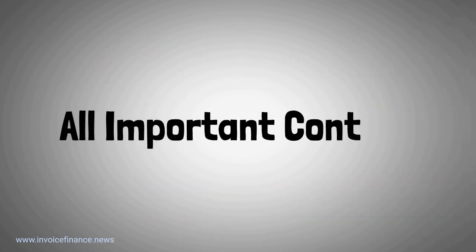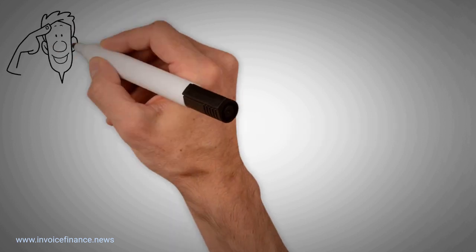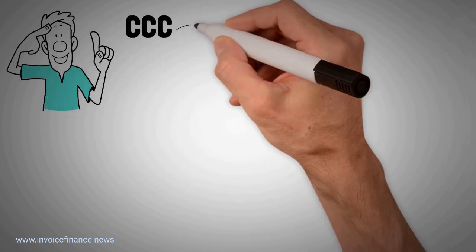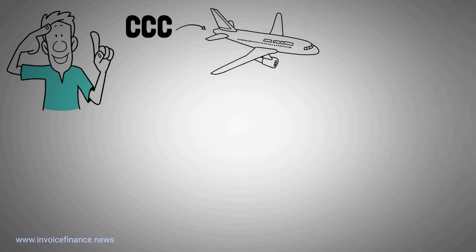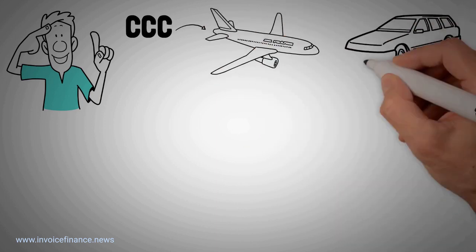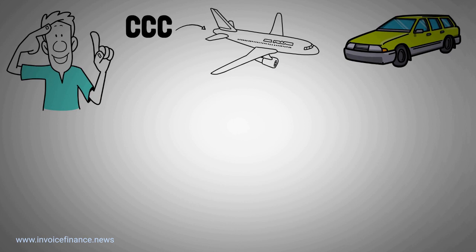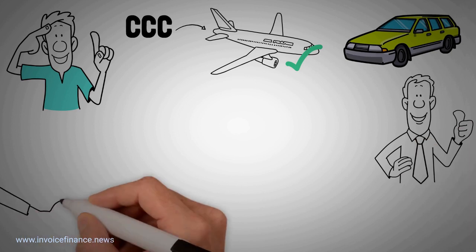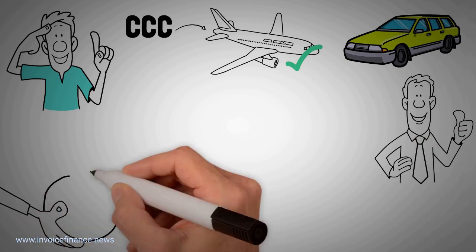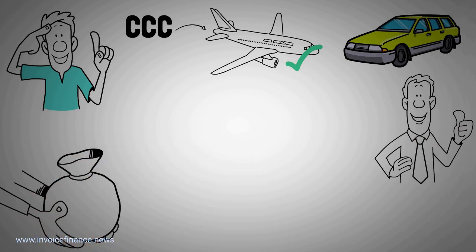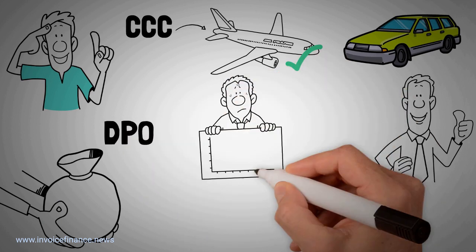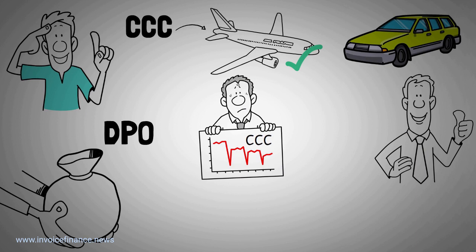All-important context. There are a number of key factors to consider. Comparing the CCC of a company that makes airplanes with the CCC of a company manufacturing cars is not helpful — it takes much longer to build a plane than a car. More useful is to compare company CCCs in the same sector. A company that has managed to negotiate payment terms with suppliers so that they have a high DPO might create a low or even negative CCC score.